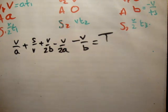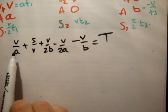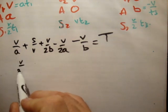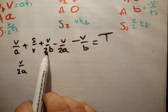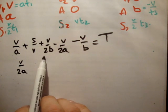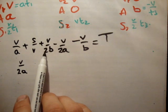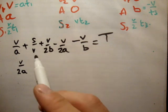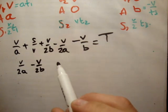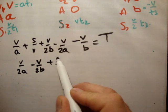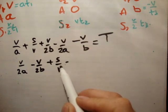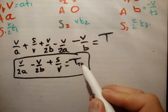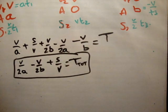Alright. So, we have no mention of time here. We're doing well so far. So, let's rearrange. v over a, minus v over 2a, is v over 2a. v over 2b, plus v over 2b, minus v over b, is minus v over 2b, and plus s over v, is equal to t total. Alright. And there's your answer.